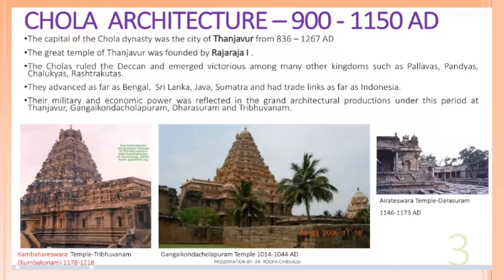The great temple of Tanjavur was founded by Raja Raja I. The Cholas ruled the Deccan and emerged victorious among many other kingdoms such as the Pallavas, Pandyas, Chalukyas, and Rashtrakutas. They advanced as far as Bengal, Sri Lanka, Java, and Sumatra, and had trade links as far as Indonesia. Their military and economic power was reflected in the grand architectural productions of this period at Tanjavur, Gangaikonda Cholapuram, Dharasuram, and Thirubhuvanam.